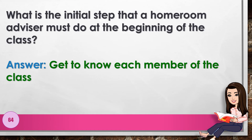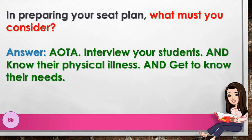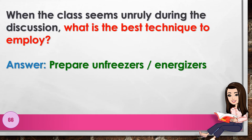Number 65: In preparing your seat plan, what must you consider? Answer: all of the above — interview your students, know their physical illness, and get to know their needs. Number 66: When the class seems unruly during discussion, what is the best technique to employ? Answer: prepare unfreezers or energizers. Number 67: What must you establish at the beginning of class to ensure order and discipline? Answer: set your rules and expectations.